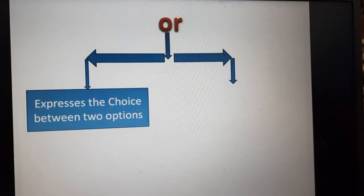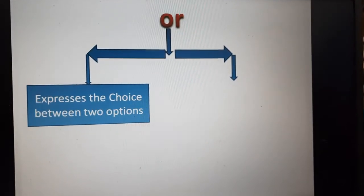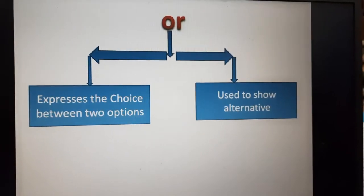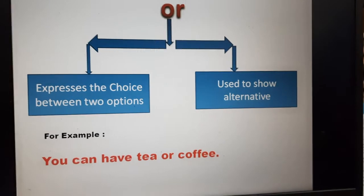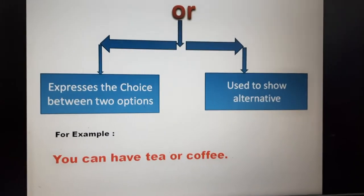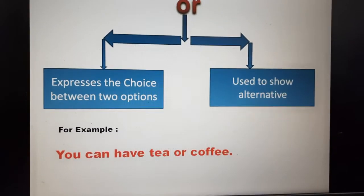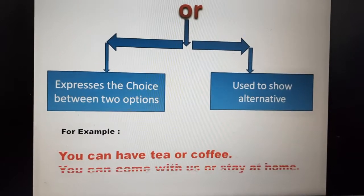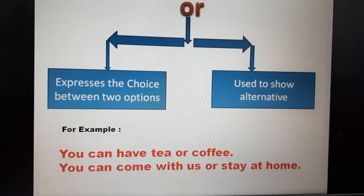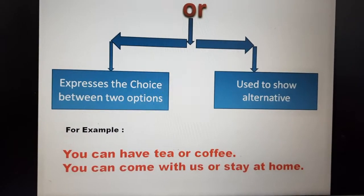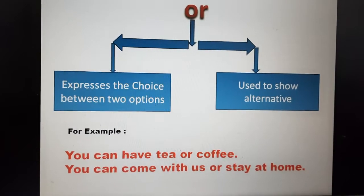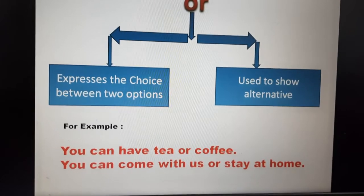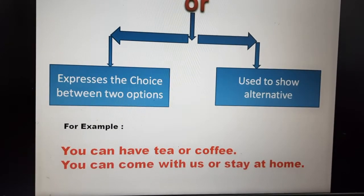The next conjunction is 'or'. Or expresses the choice between two options and is used to show alternatives. For example: You can have tea or coffee — you have a choice between these two, you can have any one. You can come with us or stay at home — in this sentence also, you have two choices and can select any one.